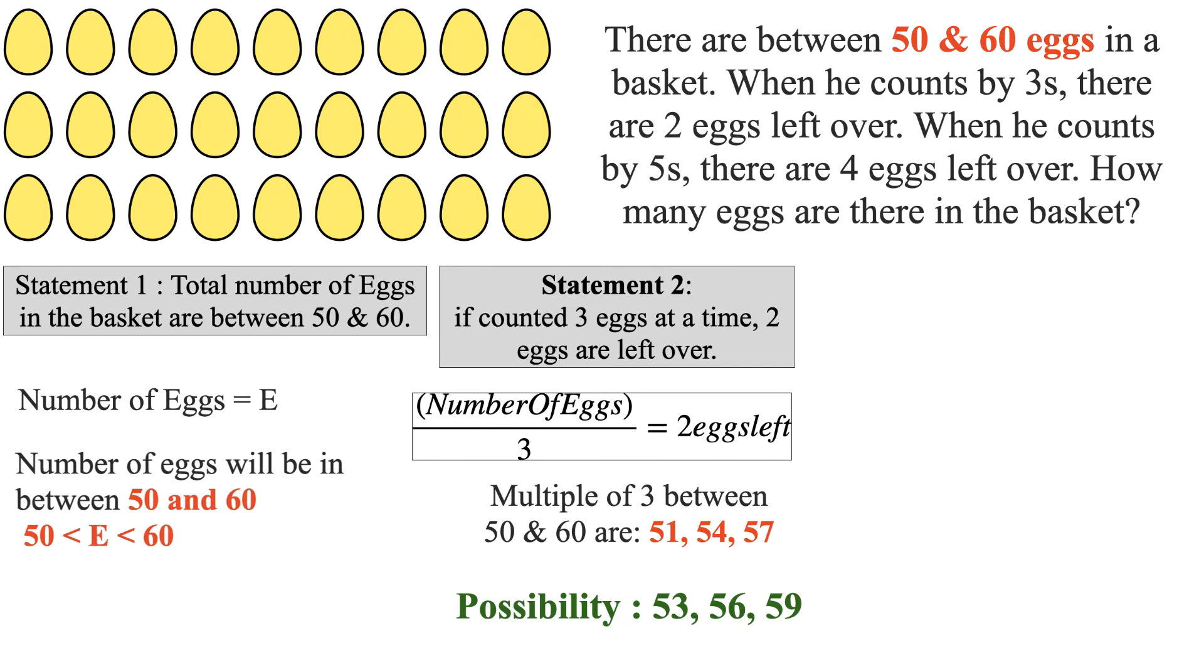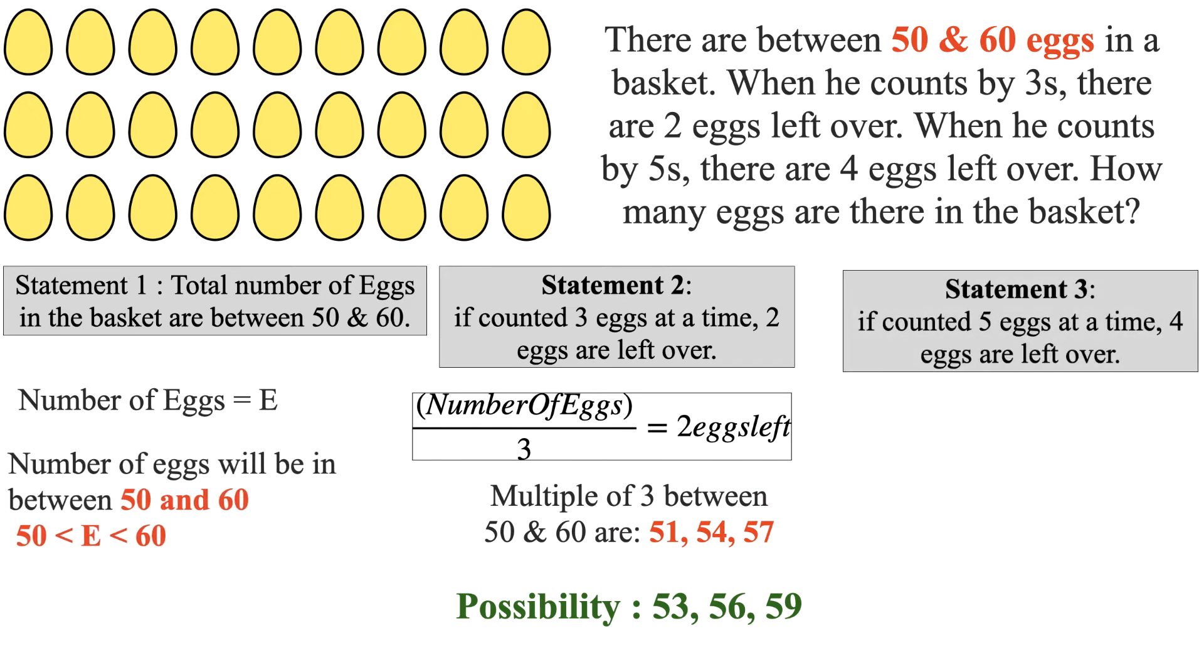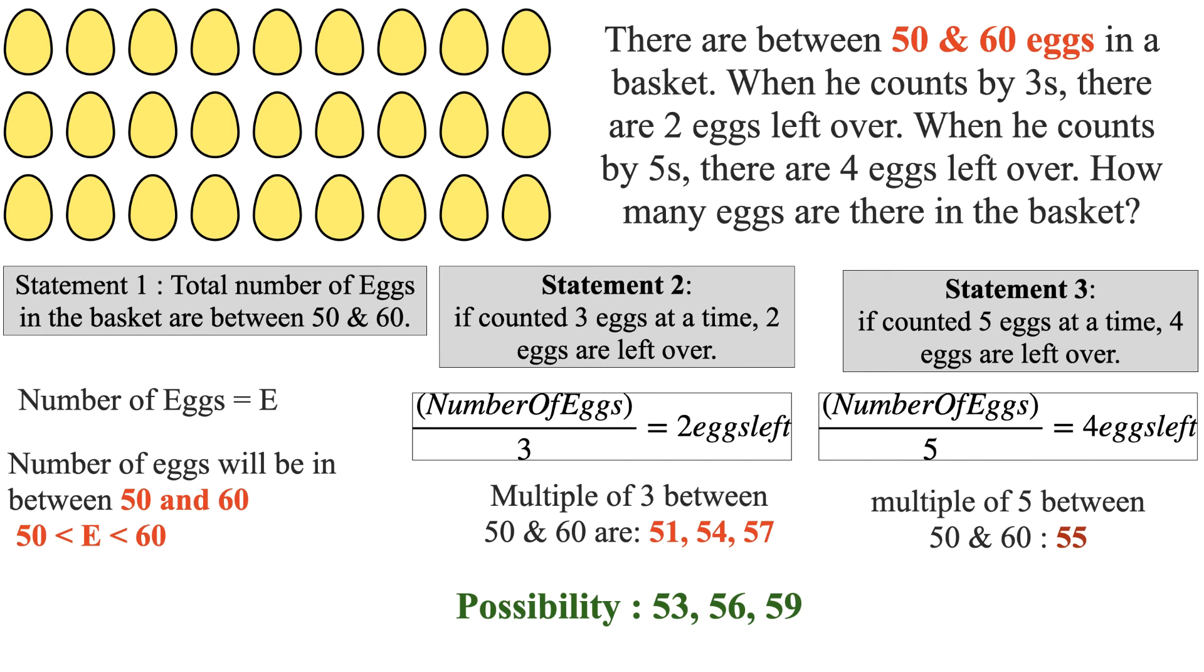In Statement 3, it is also given that if counted 5 eggs at a time, 4 eggs are left over. So number of eggs E will be a multiple of 5 between 50 and 60 plus 4. That is, remainder should be 4 after dividing number of eggs present in the basket by 5. So multiple of 5 between 50 and 60 is 55. Possible answer for E based on Statement 3 is 59.